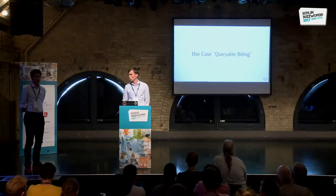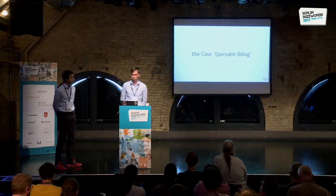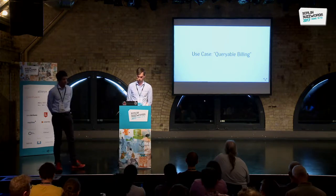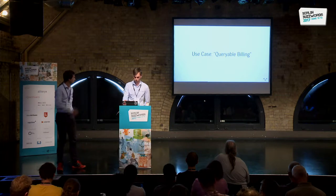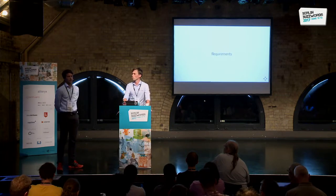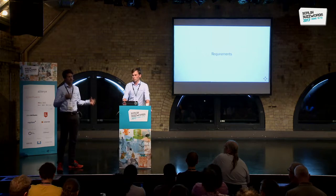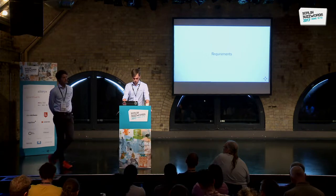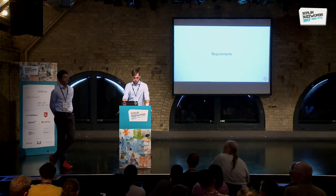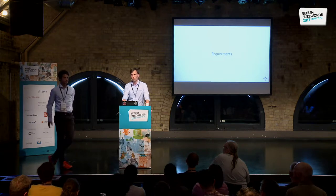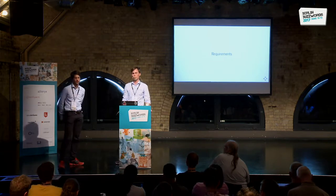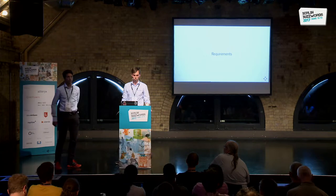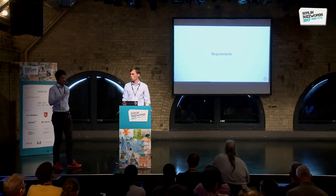Just a quick introduction of our use case. We called it queryable billing — it's basically a prototypical use case which we condensed from mainly one project we've seen at a client. It wasn't our own project, but an adjacent project which was solved completely differently. But then we heard about queryable state and Flink, and we thought most of that we could have done with Flink, and we just wanted to try out how one could have solved it.